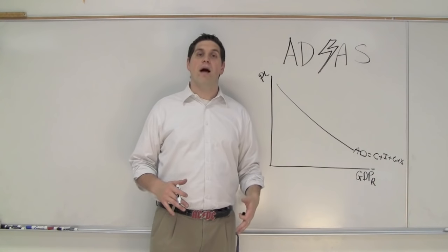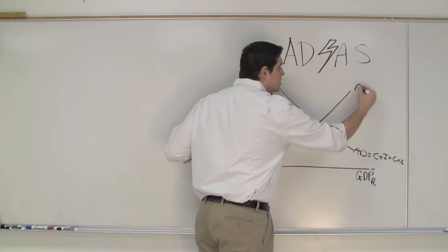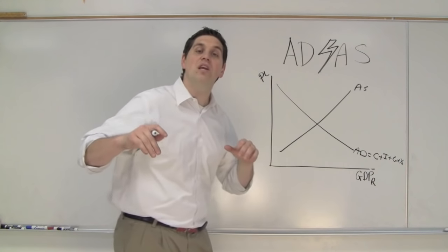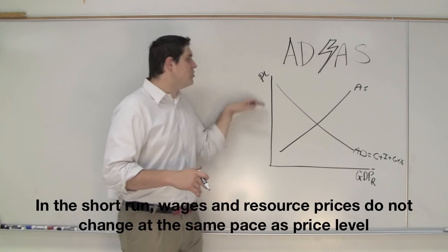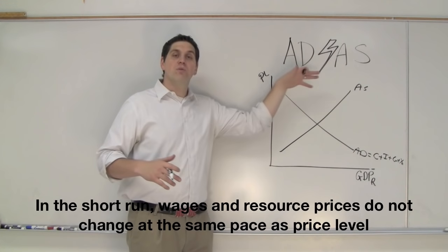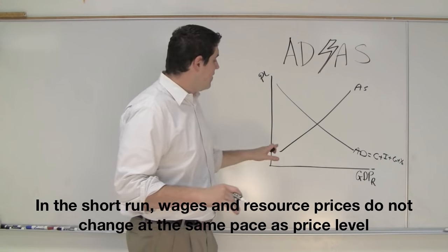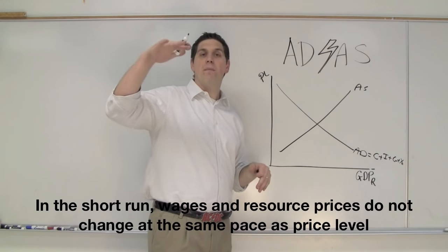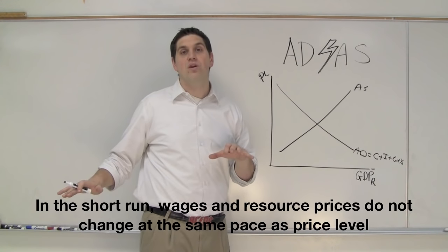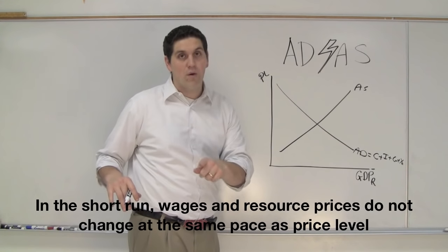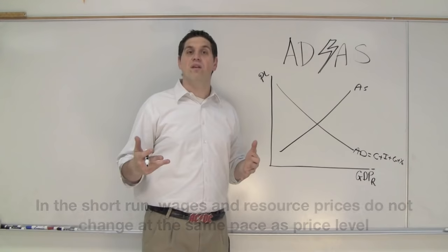The next step is aggregate supply. Aggregate supply, as you could expect, is going to be upward sloping. But pay attention — this is the short-run aggregate supply. When price levels go up, more firms will produce more. In the short-run, the prices go up but the wages of workers and the price of resources don't go up. So when the price goes up, firms will produce more because they're making more profit.